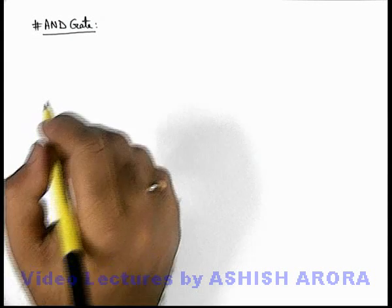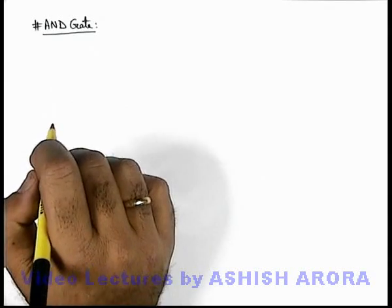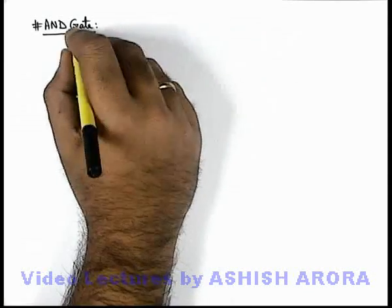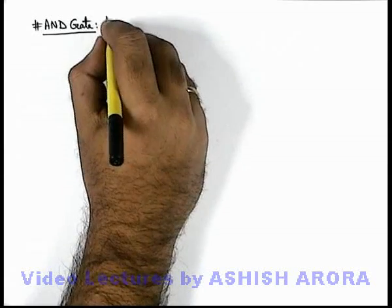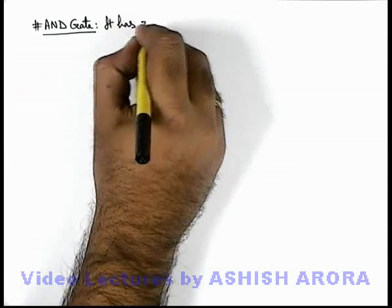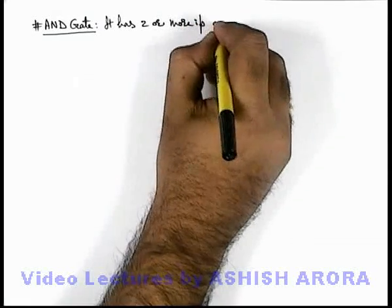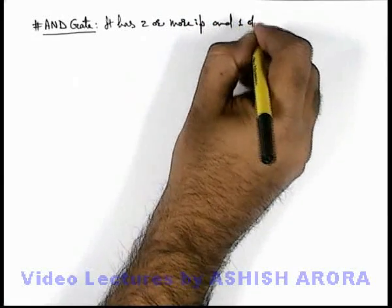Let us now study another basic gate, the AND gate. This is also similar to OR gate but with different functioning. We can write that it has 2 or more inputs and 1 output.